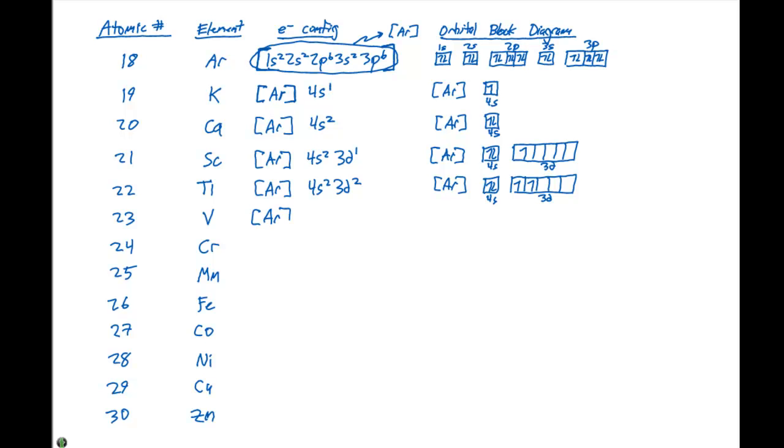Vanadium, add one more electron, it's gonna be 4s2, 3d3. That's gonna give us a block diagram with the two electrons in the 4s, and three in the 3d.